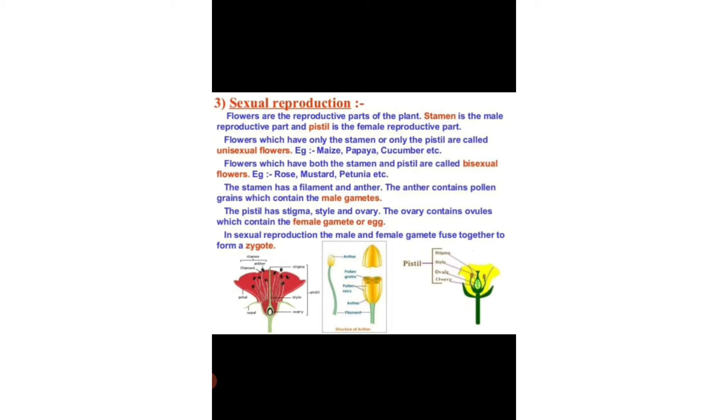The stamen has a filament and anther. The anther contains pollen grains which contain the male gametes. Whereas the pistil has stigma, style and ovary. The ovary contains ovules which contain the female gamete or egg.